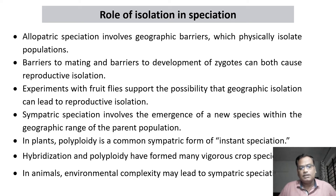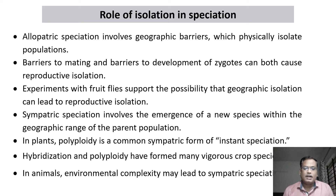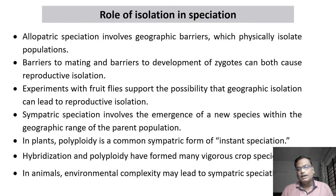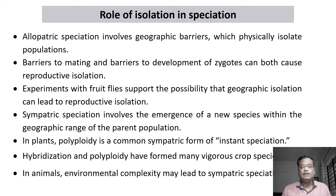Sympatric speciation involves the emergence of a new species within the geographic range of the parent population. Another topic we studied is instant speciation. Polyploidy in plants — unlike in animals, where polyploidy is normally fatal or lethal — can be retained by plant species. If it is advantageous, that polyploidy condition will be retained in nature, making it the best example of instant speciation.